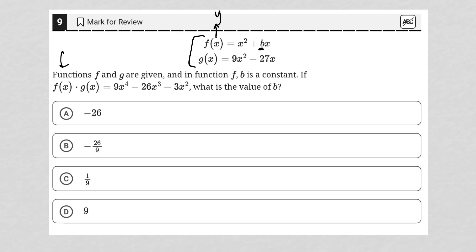I haven't noticed that b, so b is a constant. If f of x times g of x equals 9x to the fourth minus 26x cubed minus 3x squared, what is the value of b?